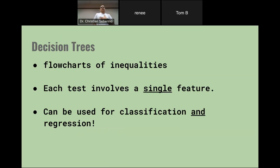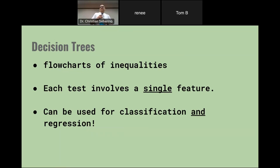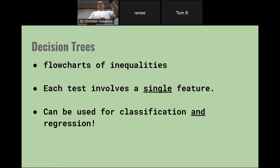So what is a decision tree? If you know what a flowchart is, you already know what a decision tree is. We're going to make a flowchart to handle numbers — a flowchart of inequalities. If a number is bigger or smaller than something, we go one path; otherwise another path. Every fork in the road is going to involve a single feature, a single property, a single measurement. This simple idea of a flowchart can be used for classification and regression — both major types of supervised learning.